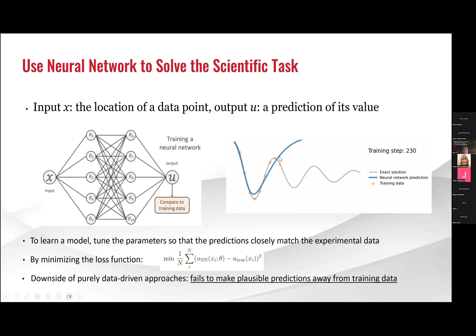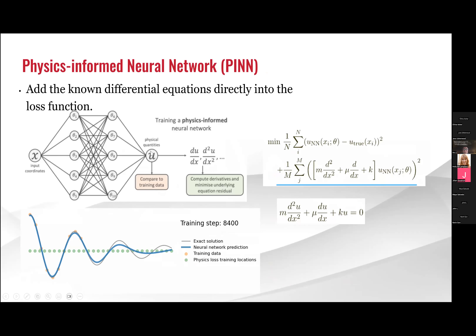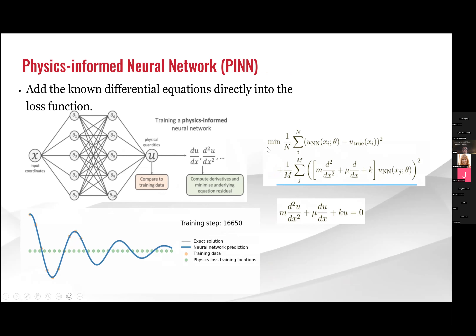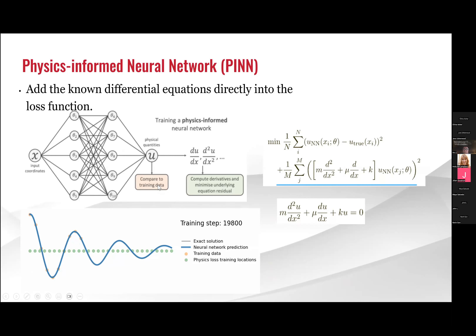If we know the physics equation underlying the process, we can integrate it into the neural network to provide better predictions. Since the output of the neural network is the solution of the physical equation, if the prediction is good, the physical equation residual should go to zero. We add this physical equation as an additional term in the loss function, so the neural network prediction not only satisfies the training data but also satisfies the physics laws. This largely reduces the number of training data needed and enables predictions in regions where we have no training data.